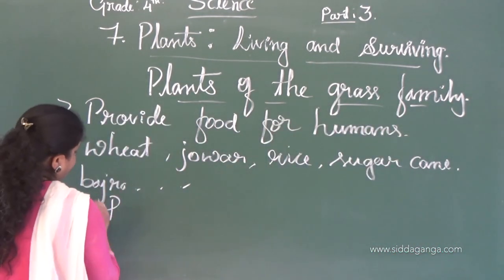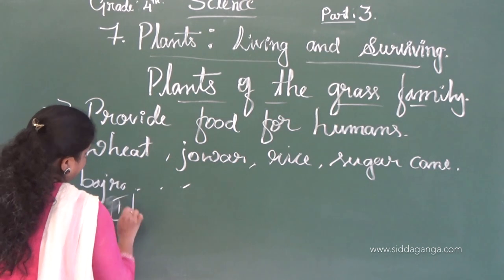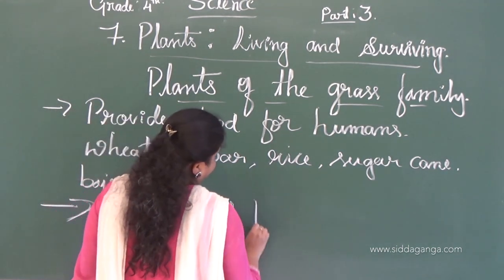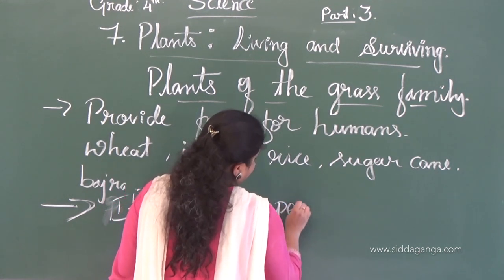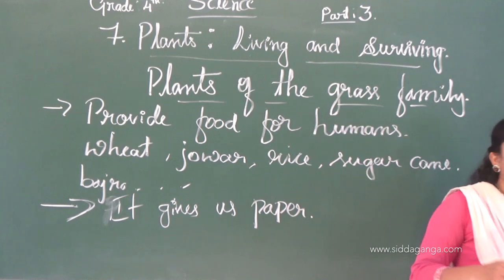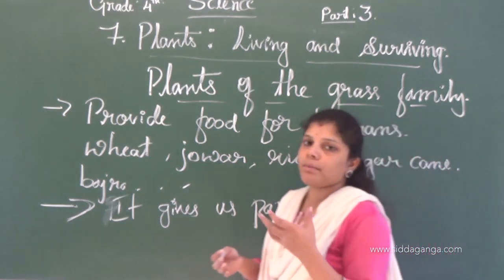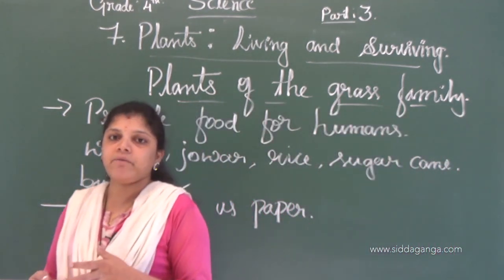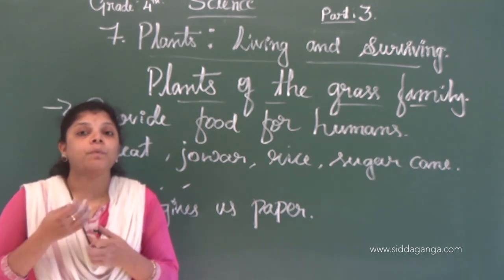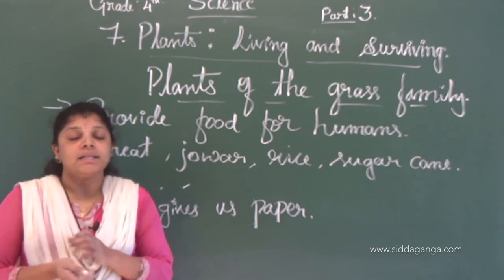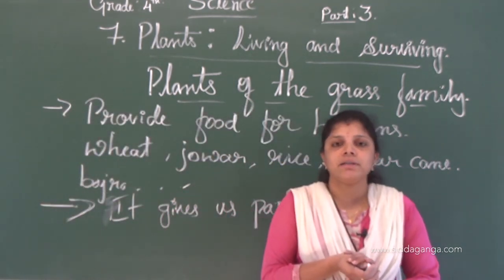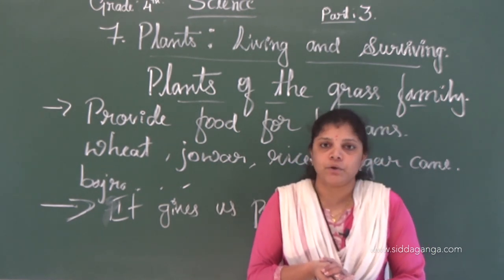Grass family plants also give us paper. We use bamboo, which is related to the grass family, to make paper. The Egyptians were the first people to make paper. They used grass family leaves to make what they called papyrus. The word 'paper' comes from the word 'papyrus'.